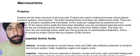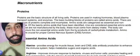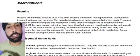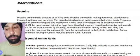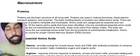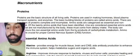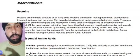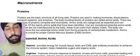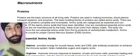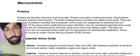Based on the amino acids, we can divide protein into two categories: complete and incomplete protein. Of all the amino acids that have been identified, there are 20 in total. Out of them, nine are considered essential amino acids.